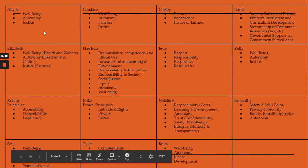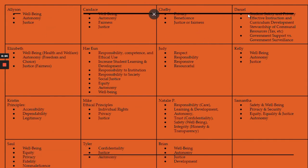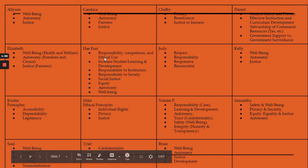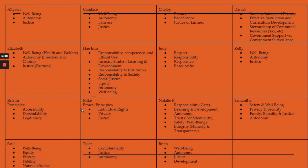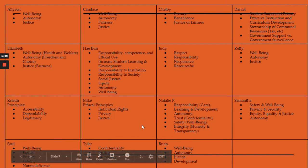A lot of people mentioned: well-being, privacy, beneficence, justice or fairness, student safety and privacy, curriculum development, stewardship of communal resources, respect, responsibility, being responsive and resourceful, competence and ethical use, social justice, equity, individual rights, privacy and justice, non-maleficence (so not harming anyone), trust, confidentiality, and care.